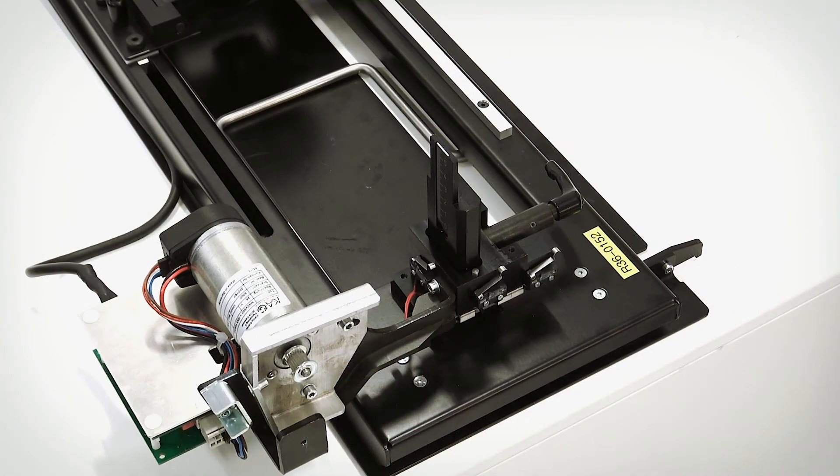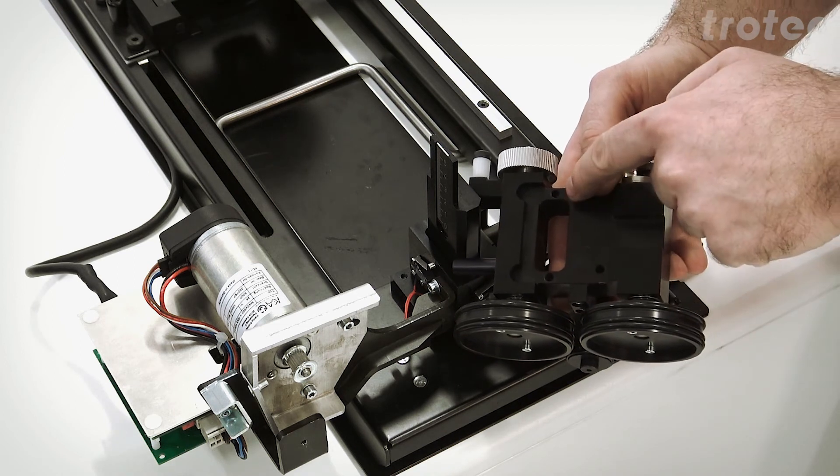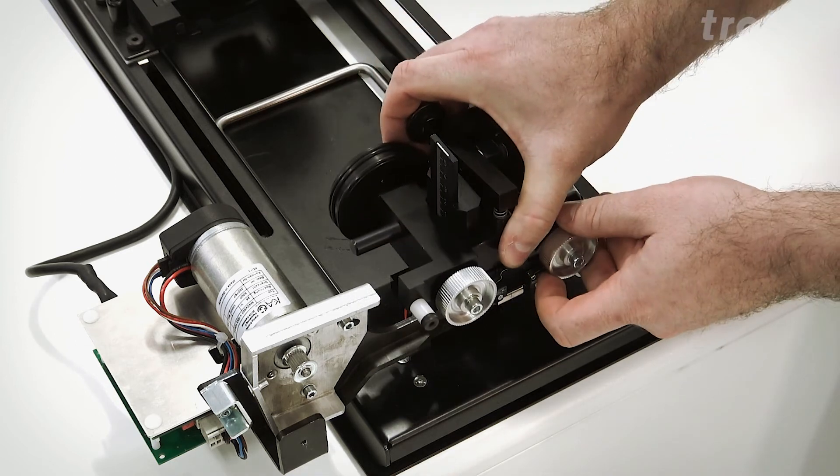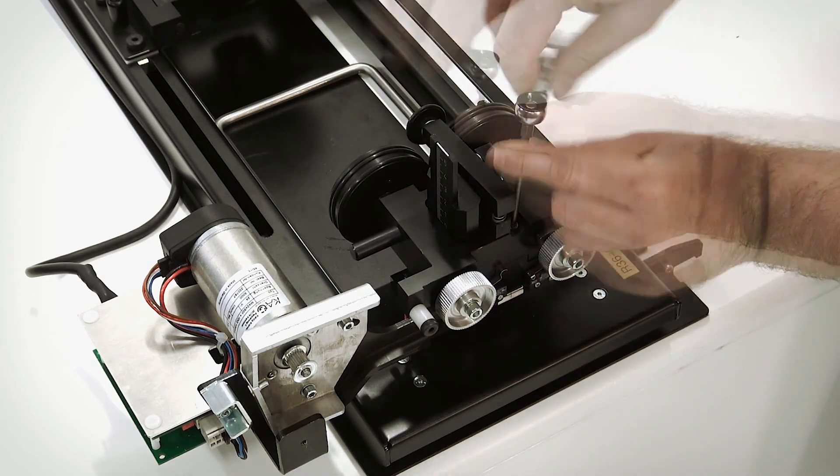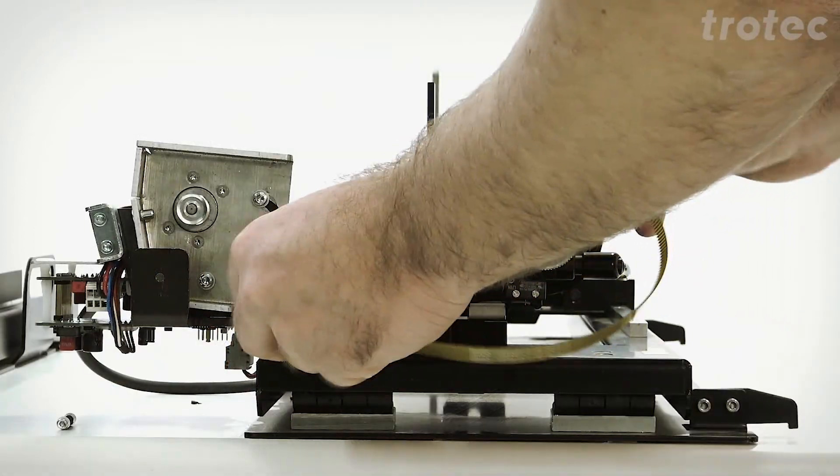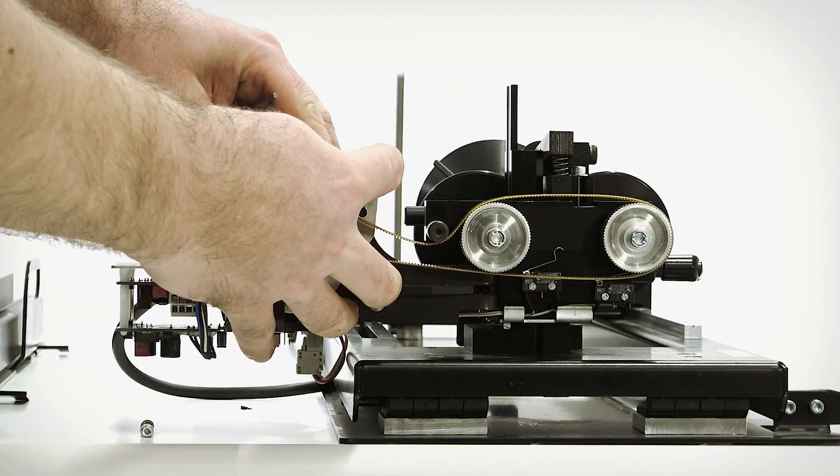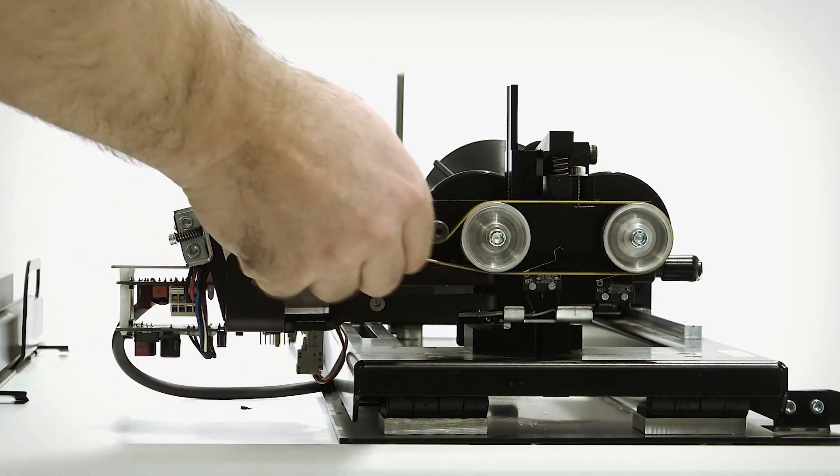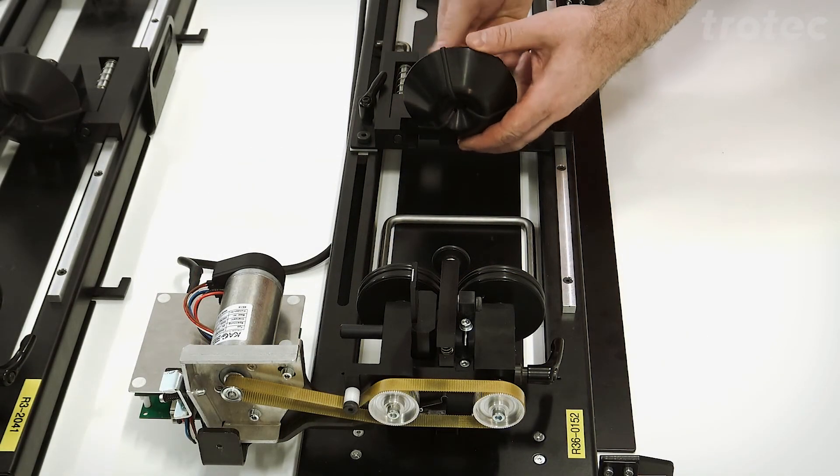When installing the drive roll mechanism, make sure that the guide holes are properly on the guide pins on the below plate. Attach the screws and then install the belt. Tension the belt according to what we demonstrated earlier. Finally install the opposite end of the drive roll mechanism.